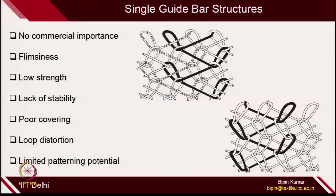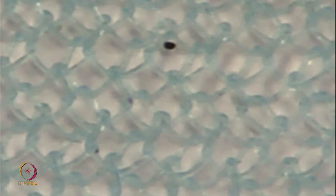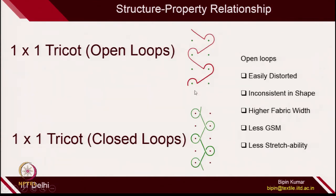If you see this structure, it's very, very porous and loops are in a tilted position because both the sinker loop and underlap are in the same direction, causing unequal tension on the loop. If you change the overlap and underlap directions, you can get either open loops or closed loops. Open loops are usually more distorted — you will not get a proper shape of the loop. The fabric width will be higher, the structure will be more porous with less GSM, and open loops are comparatively less extensible compared to closed loops.